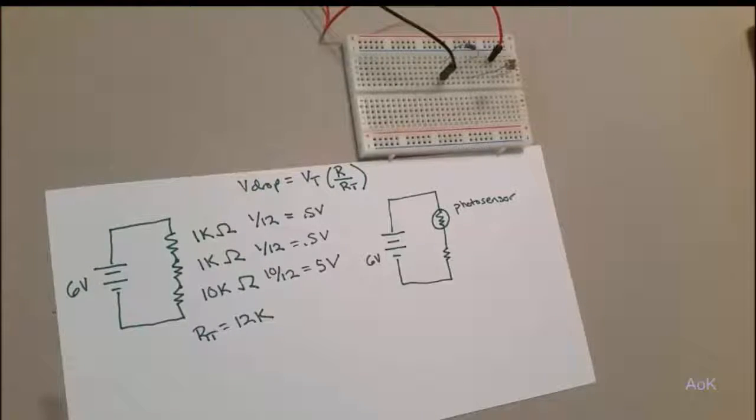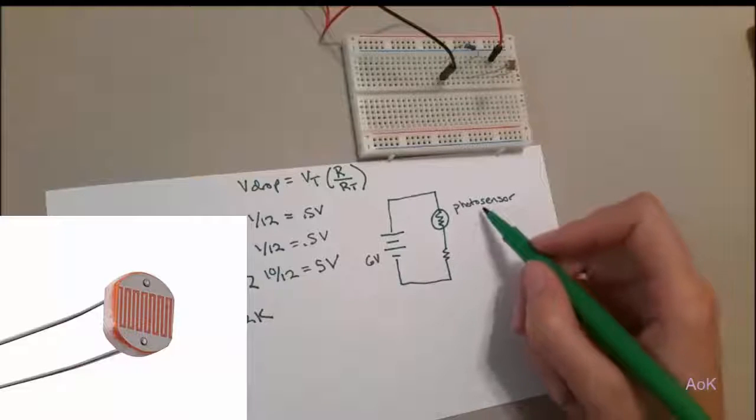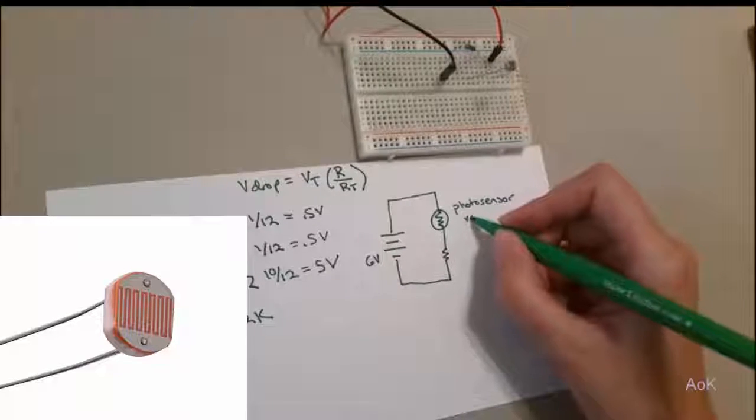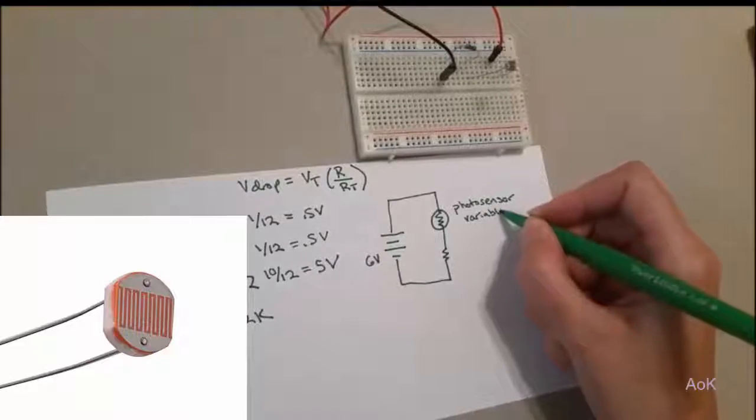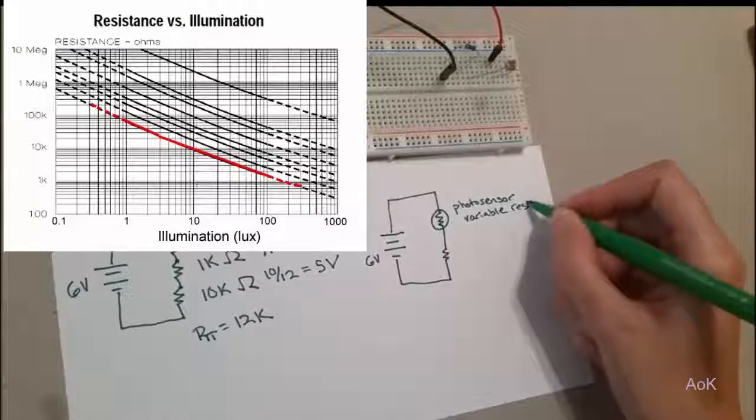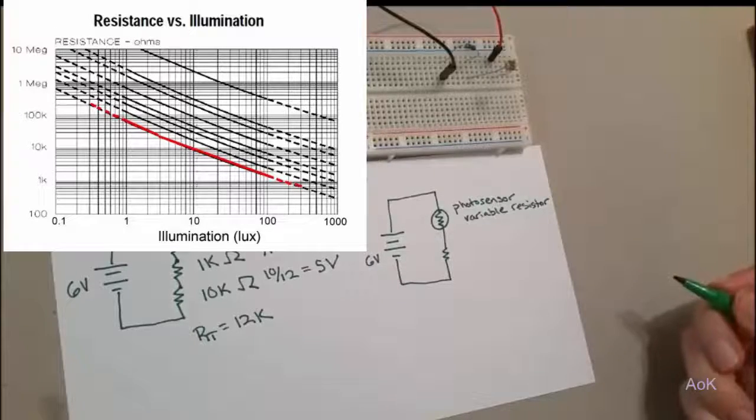So why do we care so much about voltage drop? Well, many Arduino sensors work by using something called a voltage divider. What happens is that the sensor is actually a variable resistor. That means that the resistance changes depending on some other factor.